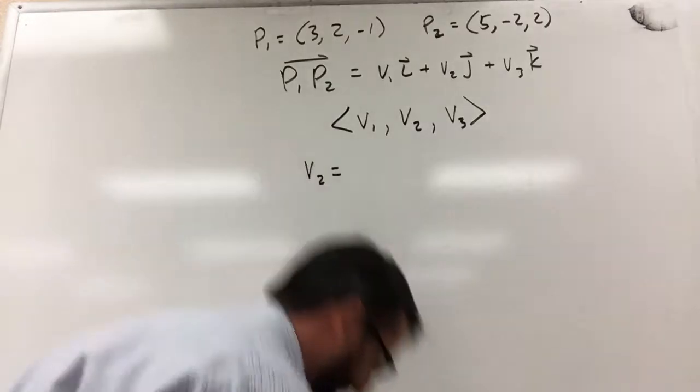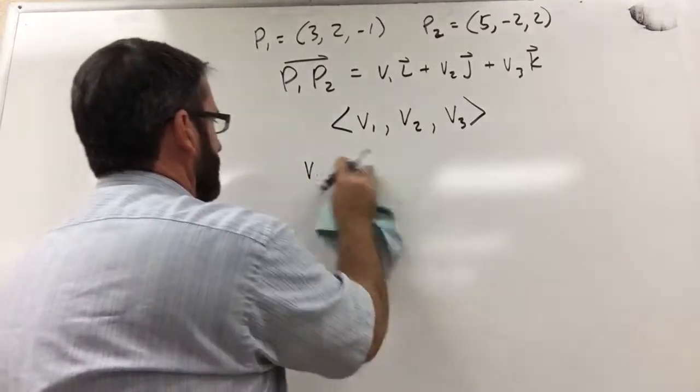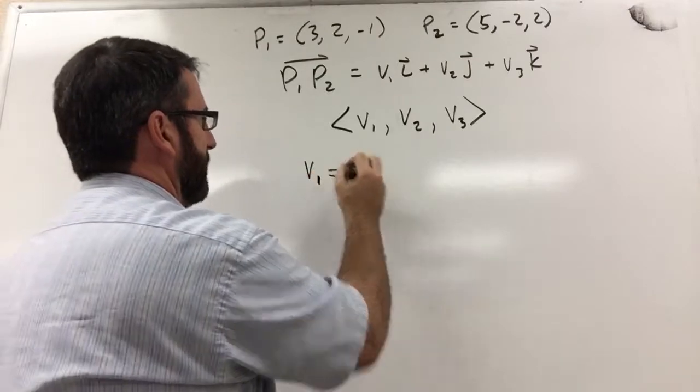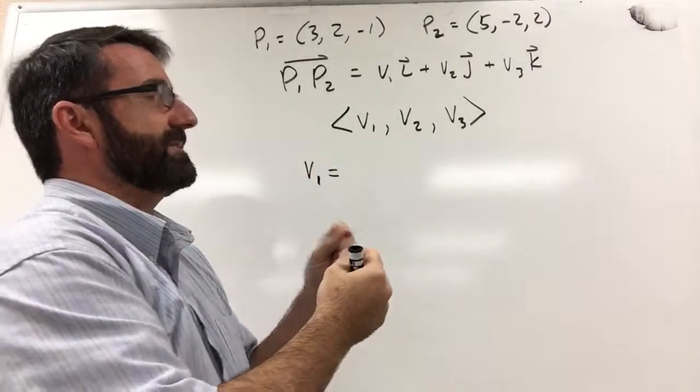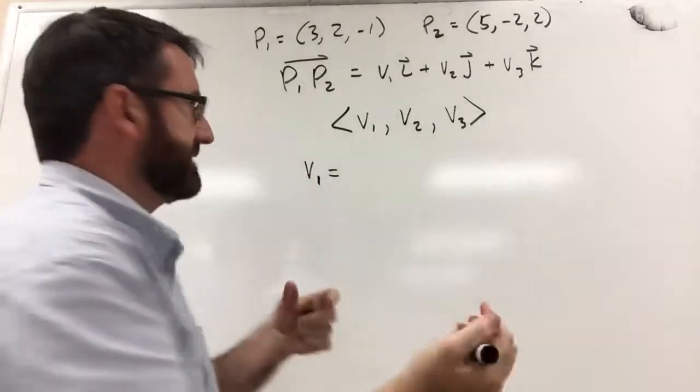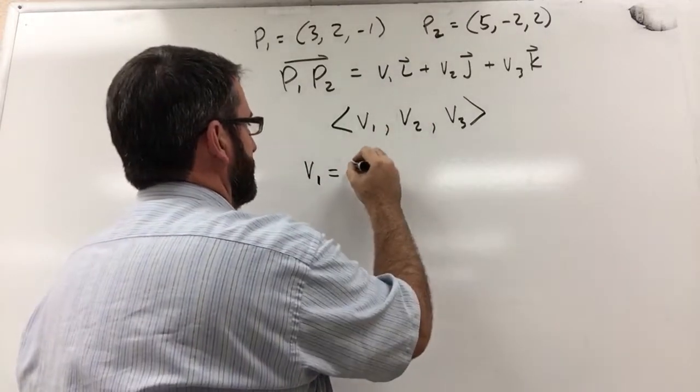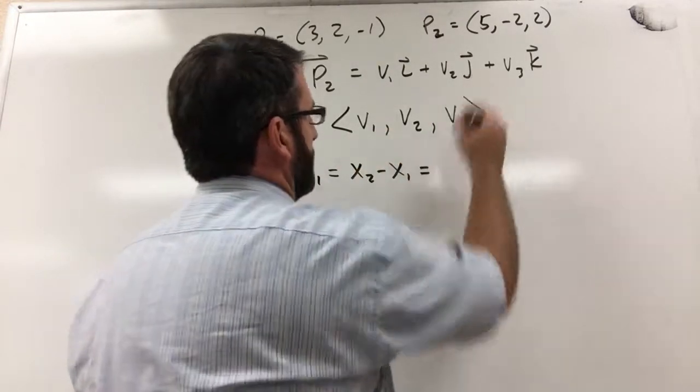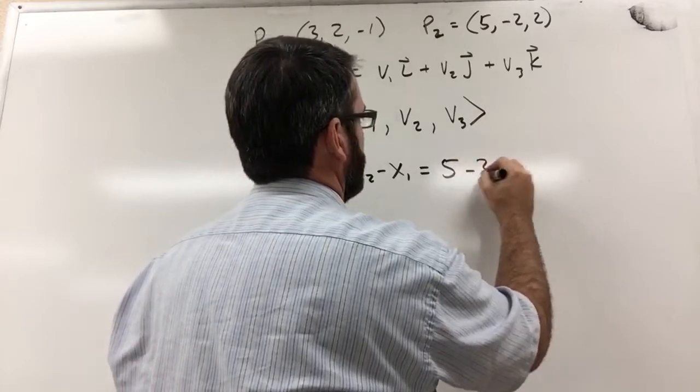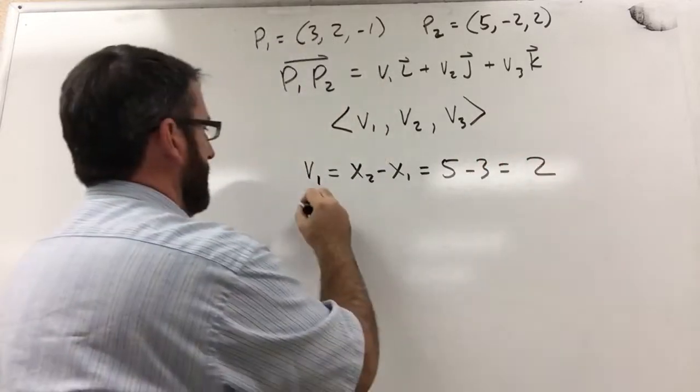v1 first, just as we did in component form, v1 is the distance that we've traveled along the x-axis. So this is x2 minus x1, which is 5 minus 3, which is 2.